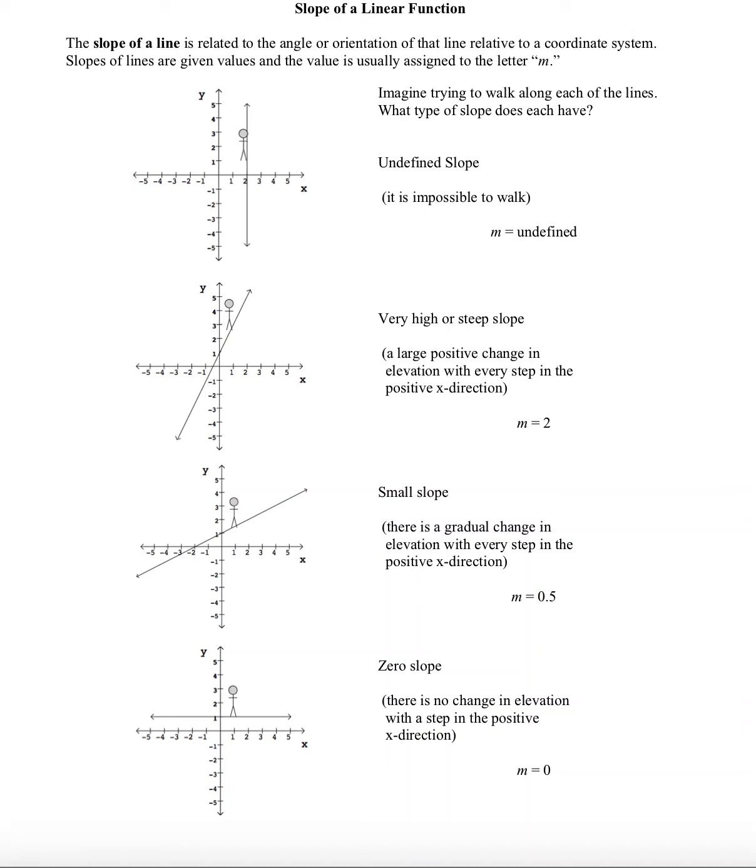The slope of a line is related to the angle or orientation of that line relative to a coordinate system. Slopes of lines are given values, and the value is usually assigned to the letter M.